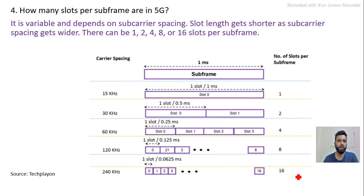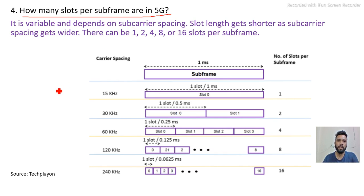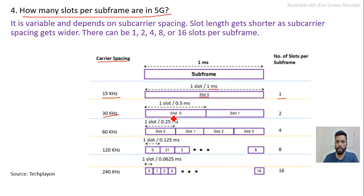Next question: how many slots per subframe are in 5G? Slots per subframe is not fixed — it is variable and depends on the subcarrier spacing. For 15 kHz, there is 1 slot per subframe (1 ms). For 30 kHz, 2 slots; for 60 kHz, 4 slots; for 120 kHz, 8 slots; and for 240 kHz, 16 slots per subframe.